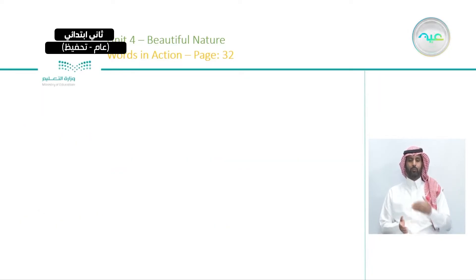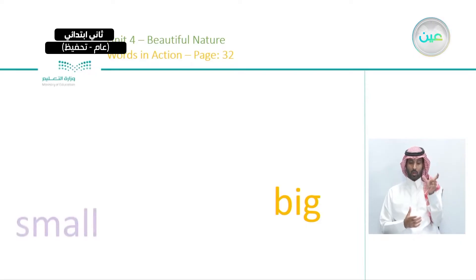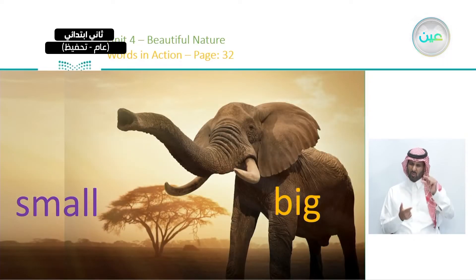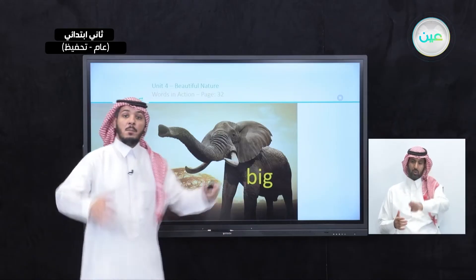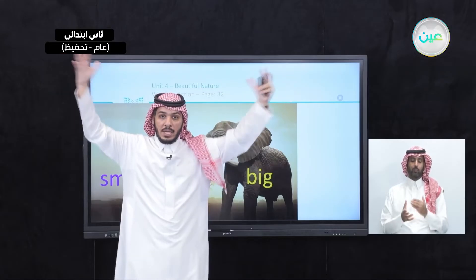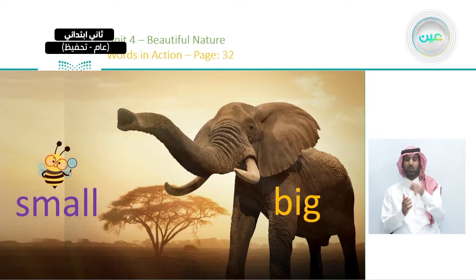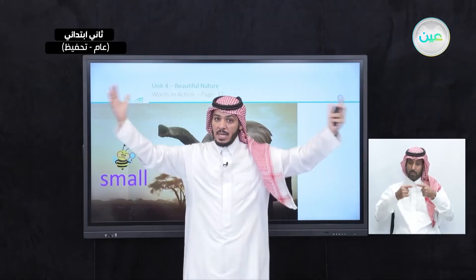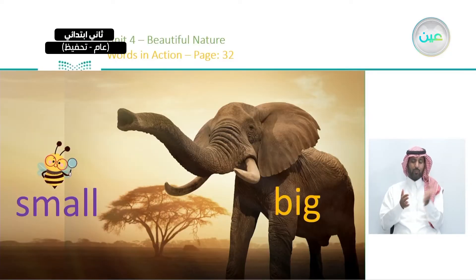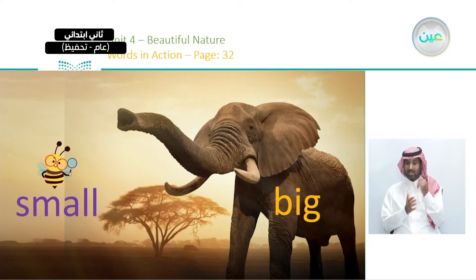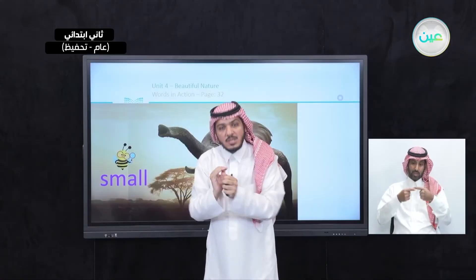Now we have big and small. Can you tell me what the big one is? This is an elephant — we have a big elephant. And we have a small bee. So big and small are two opposites. The elephant is big, the bee is small.